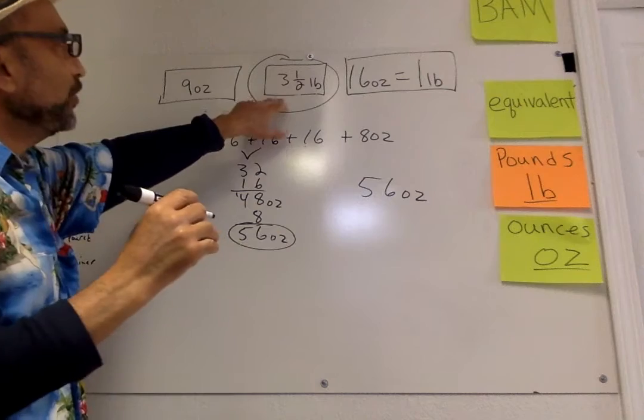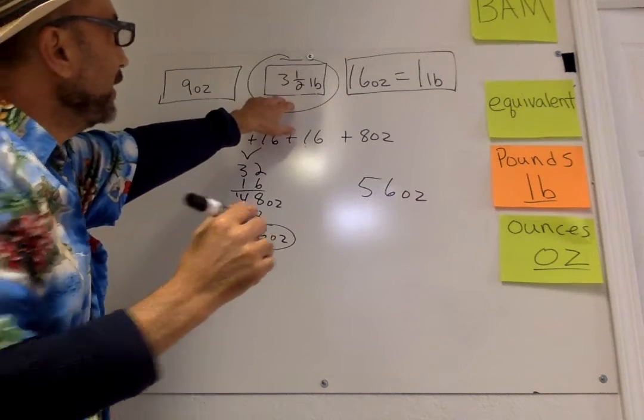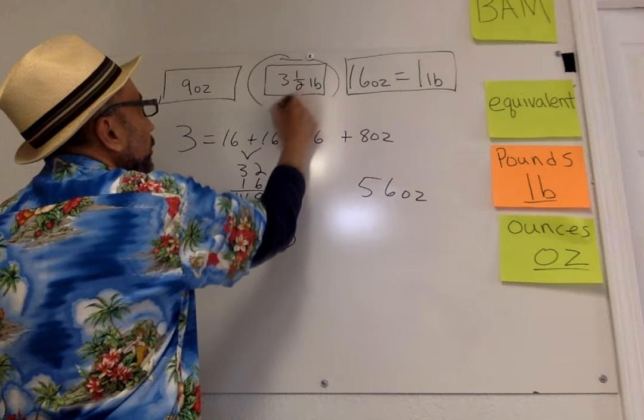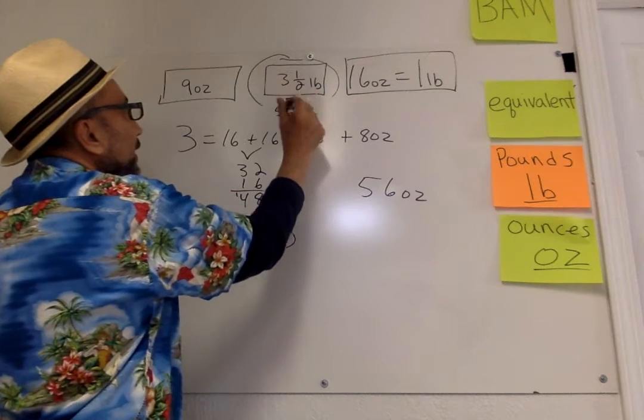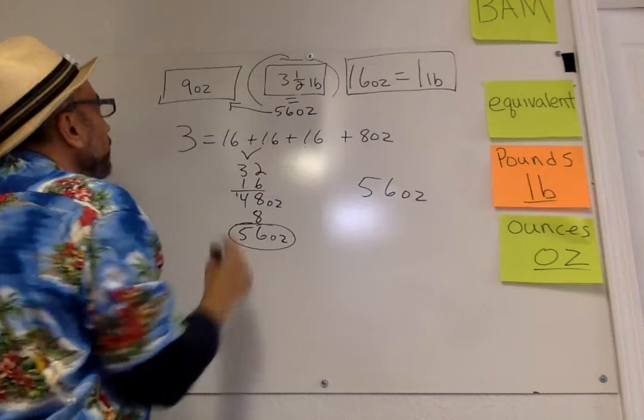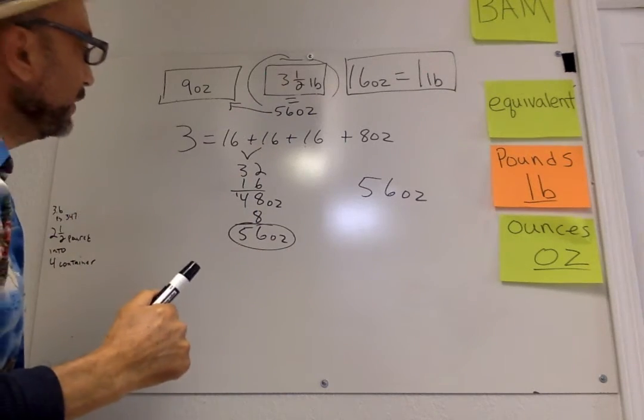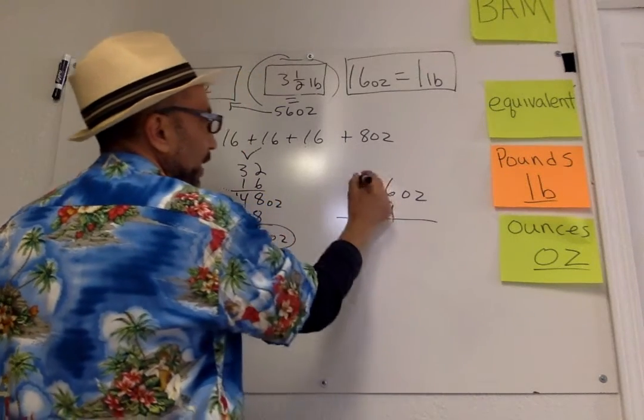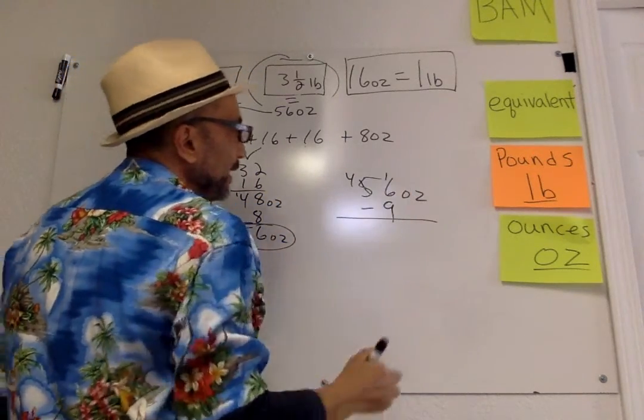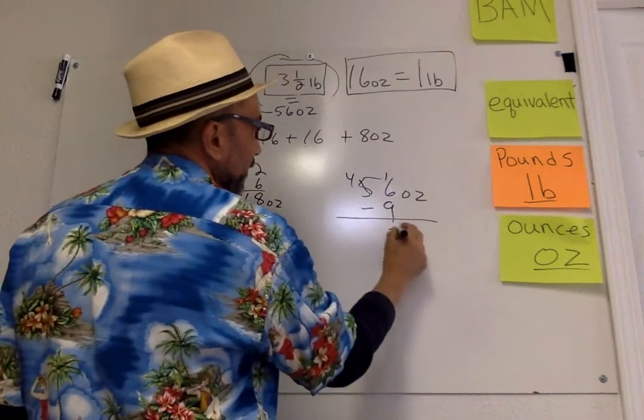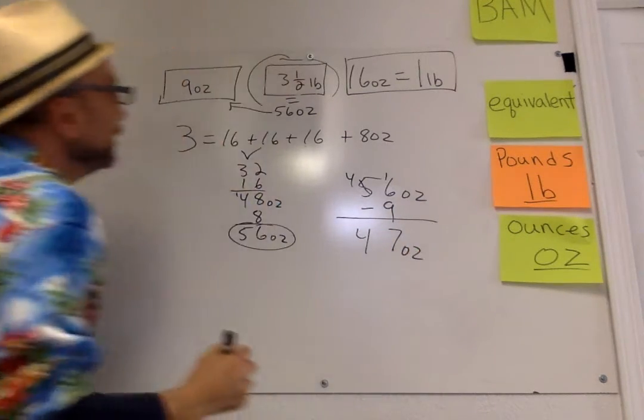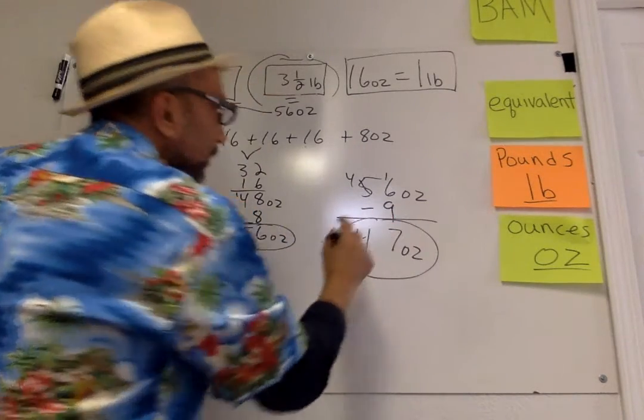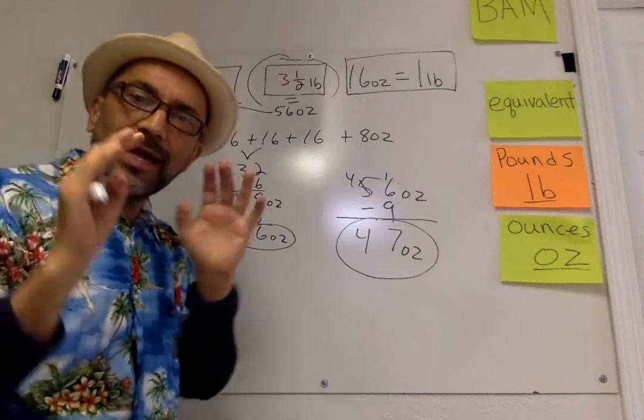So now that this is changed to 56 ounces, this is equal to 56 ounces. Now we can subtract the 9 ounces. So 56, you take away the 9 ounces. You got to borrow, that's 7. 47 ounces is the answer to this one. So let me recap what I did.